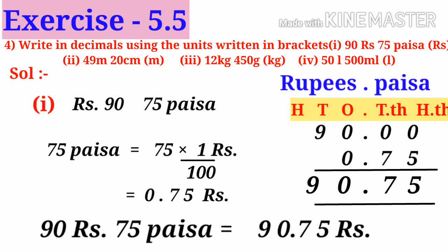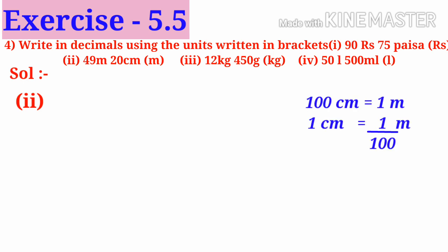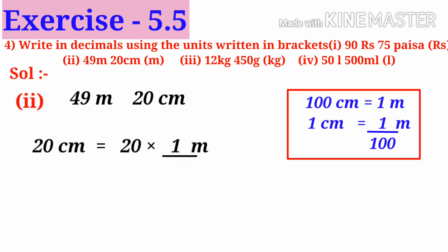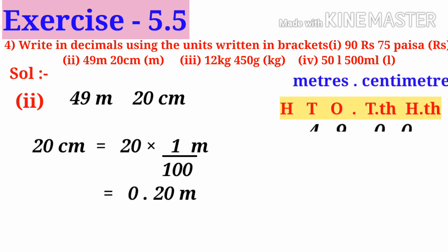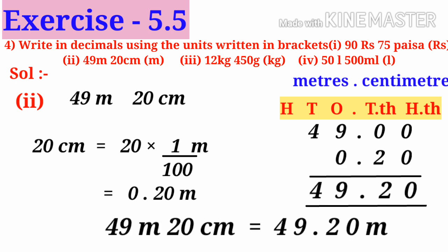Number 2: 100 centimeters makes 1 meter, so 1 centimeter is 1/100th of a meter. To convert centimeters into meters, divide by 100. So in 49 meters 20 centimeters, 20 centimeters divided by 100 equals 0.20 meters. Place in exact values: 49.00 plus 0.20 equals 49.20. So 49 meters 20 centimeters equals 49.20 meters.